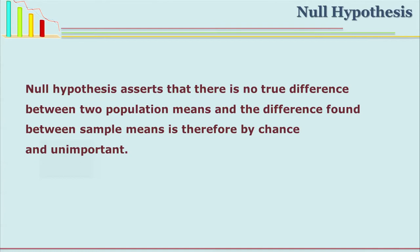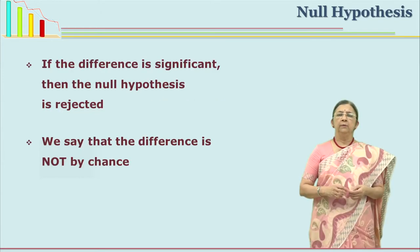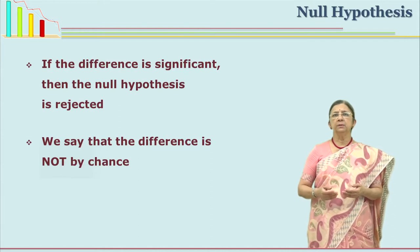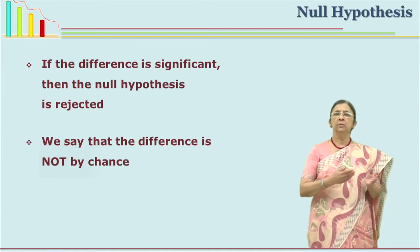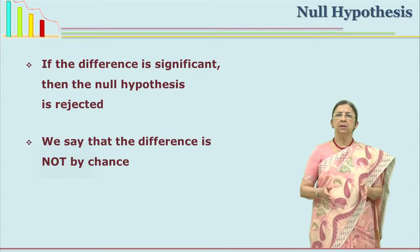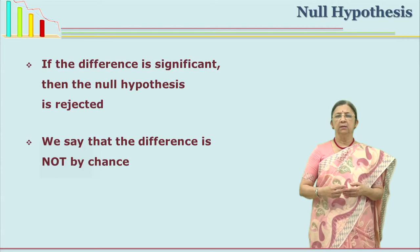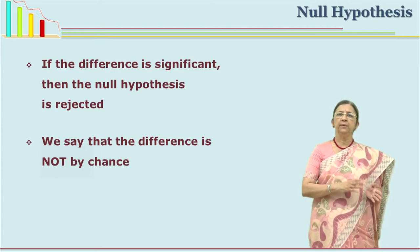When the researcher states that there is no true difference, that means if a difference is found, it is by chance; otherwise the researcher will confidently say there is really no true difference. If the difference between two means or two scores is significant, then the researcher rejects the null hypothesis. So the original null hypothesis, which stated there is no true difference, has to be rejected, and now we can say with confidence that there is a true difference between the pre and post stage, between the experimental and control group.